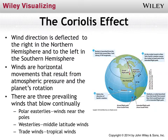When you throw in the effect of the Earth's rotation, wind direction is deflected to the right in the northern hemisphere and to the left in the southern hemisphere. The winds we feel at the surface are horizontal movements resulting from differences in atmospheric pressure — air moves from areas of high pressure toward areas of low pressure. Combined with the planet's rotation, this gives us three prevailing wind patterns: the polar easterlies, the westerlies, and the trade winds. This is what we call the Coriolis effect — it's also why water flows in opposite directions down a drain in the northern vs. southern hemisphere.